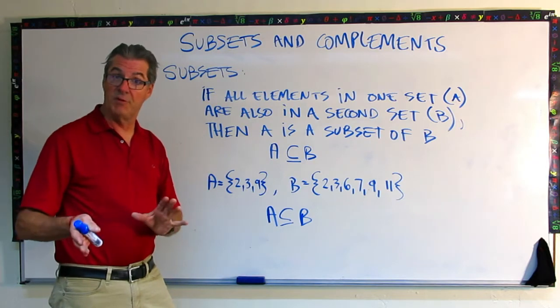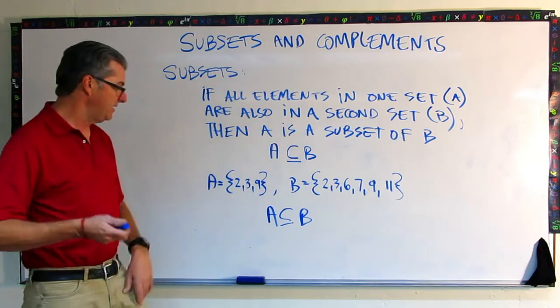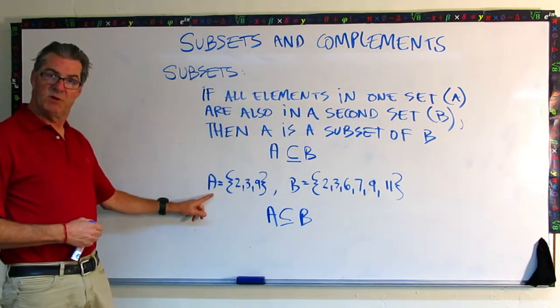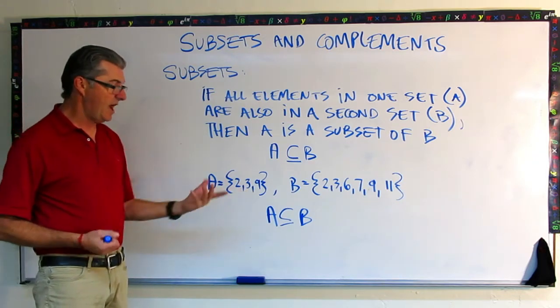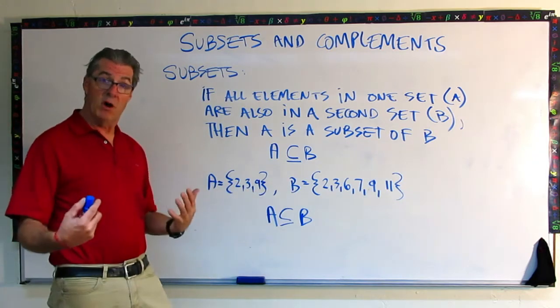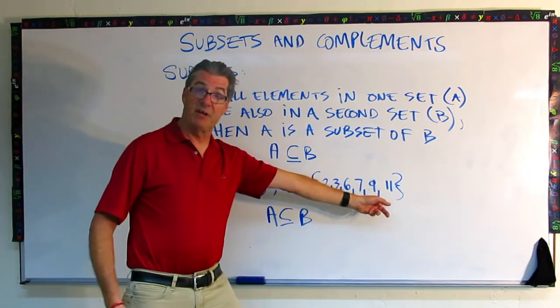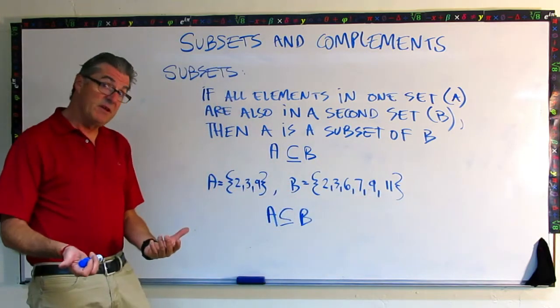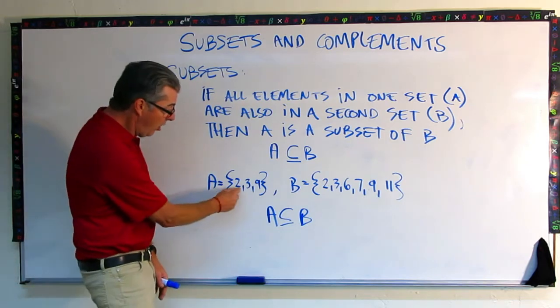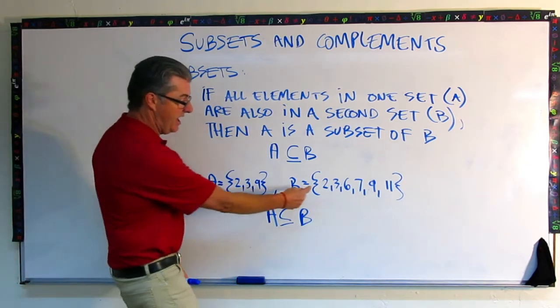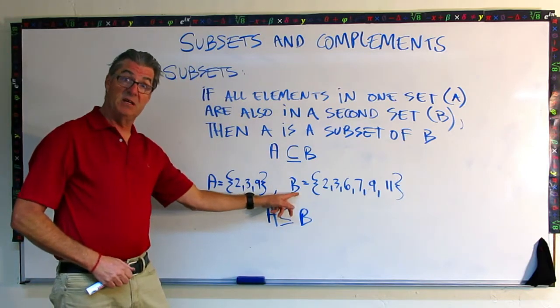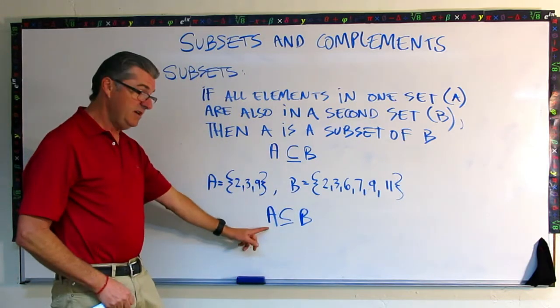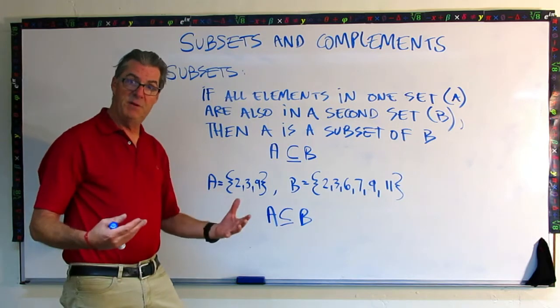Let's do an example with some numbers so you can see that more mathematically. Here's a set we call this A, and it's got the three numbers in it: 2, 3, and 9. Set B has more numbers. It's got 2, 3, 6, 7, 9, and 11. But you probably noticed already that all three of these numbers, 2, 3, and 9, are also in set B. So A is a subset of B.